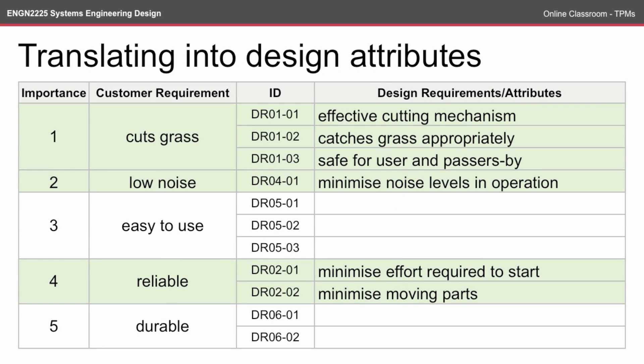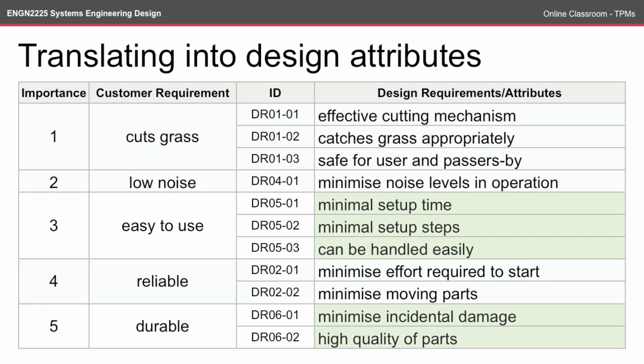It turns out that three of the customer requirements we've already translated into design requirements and attributes in the customer requirements online classroom, so I've just translated what we had in that video. That leaves the last two: easy to use and durable. Here I've called 'easy to use' as being minimal setup time — the time it takes to get started — and the minimal number of setup steps, so you don't have to go through a whole long procedure to start using the lawnmower.